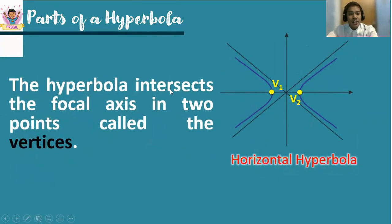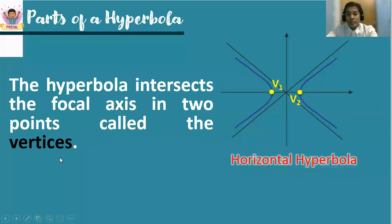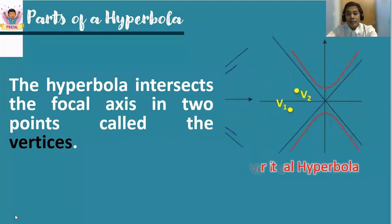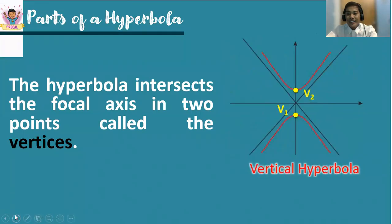The hyperbola intersects the focal axis in two points called the vertices. The focal axis is the basis of the type of hyperbola. In this example, the focal axis is located on the x-axis itself. Notice that the yellow points represent the vertices of the graph, named v-sub-1 and v-sub-2. The vertices are the turning points of the branches.